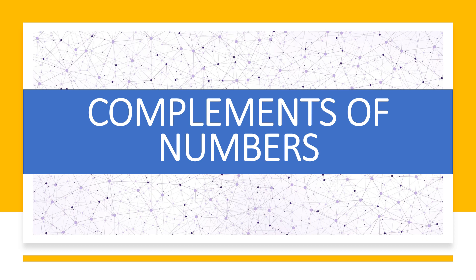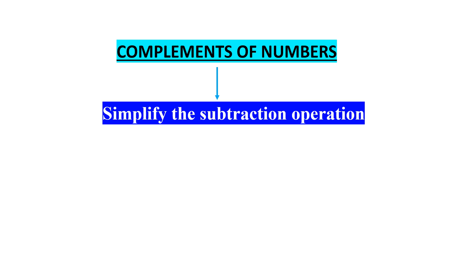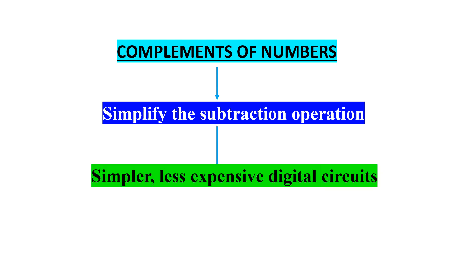Complements of numbers are used in digital computers to simplify the subtraction operation. Simplifying the subtraction operation leads to building simpler, less expensive digital circuits to perform the operation very easily.